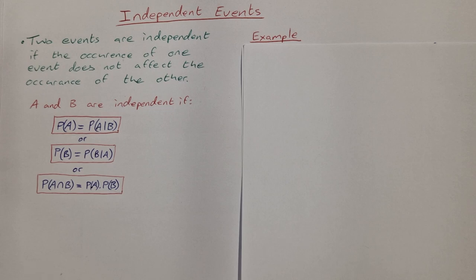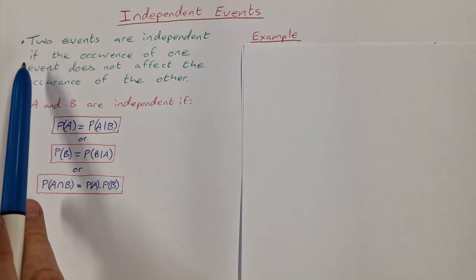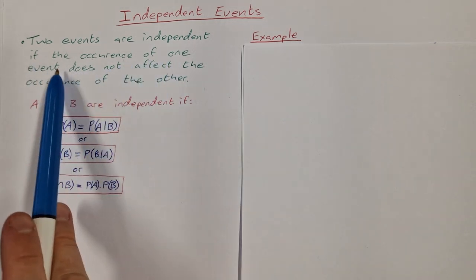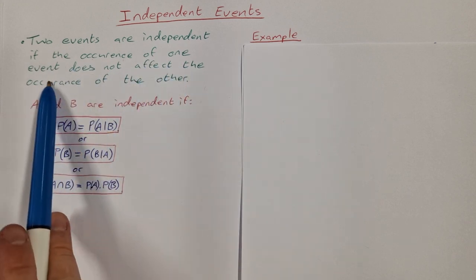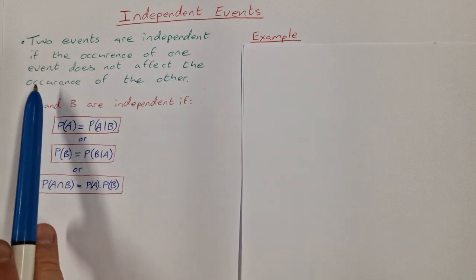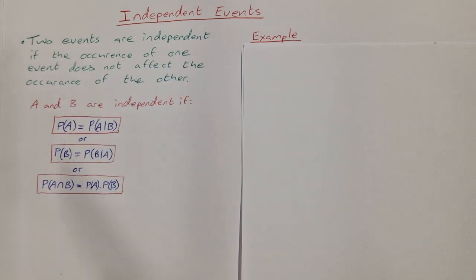In this video we're just going to take a look at a couple of examples regarding independent events in probability. Just to remind you that two events are independent if the occurrence of one event does not affect the occurrence of the other event.